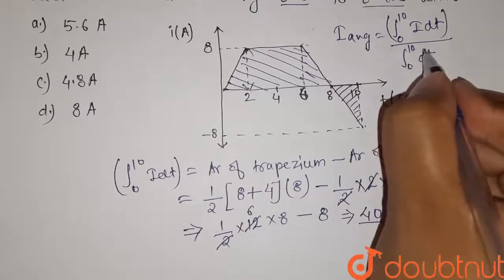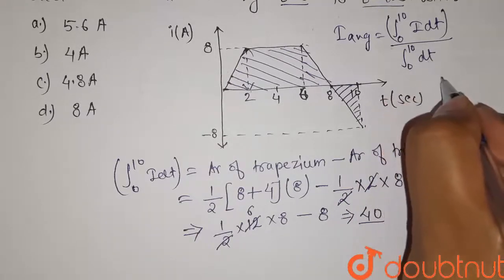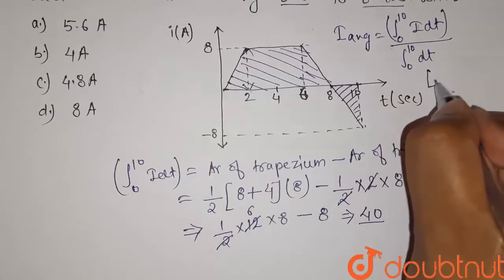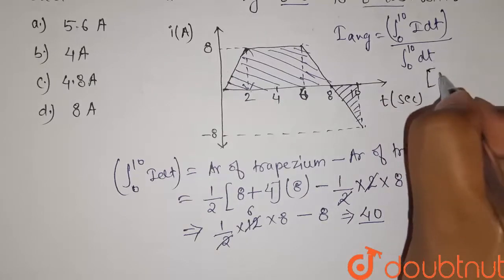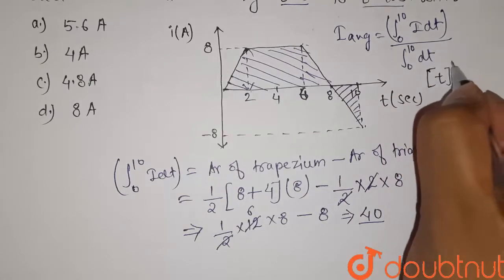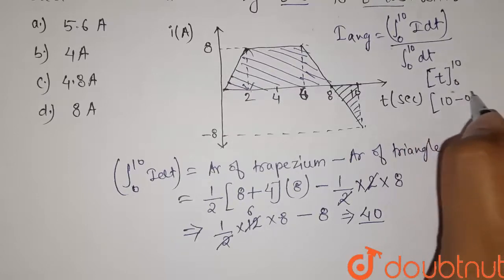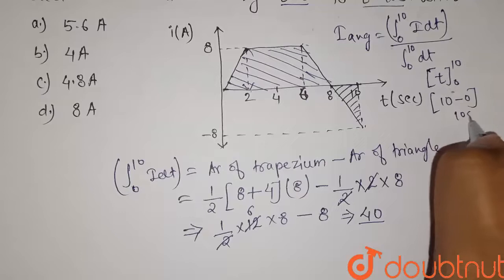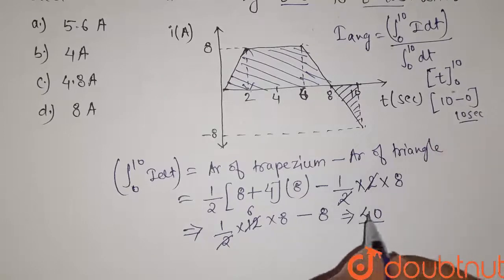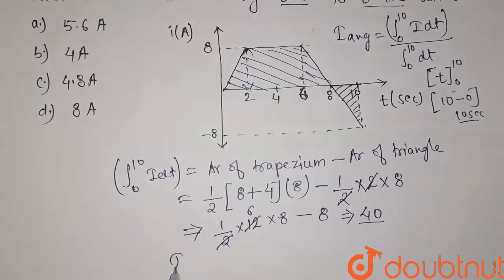This is the value of integration 0 to 10 of i dt. Now the value of this integration dt in the limit 0 to 10 will be equal to the integration of dt is t, and here limit we are putting 0 to 10, so it will be equal to 10 minus 0, so it is finally equal to 10 seconds.